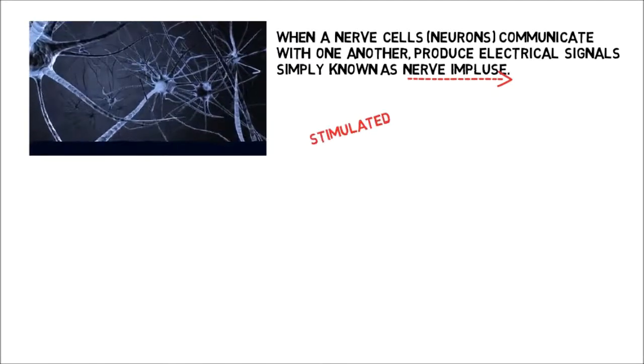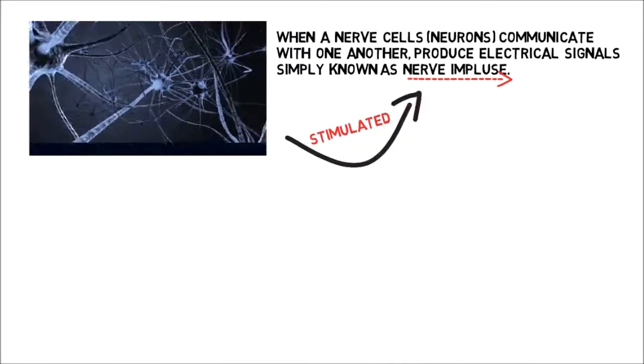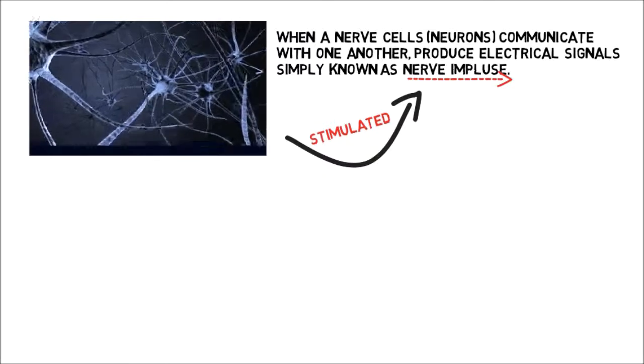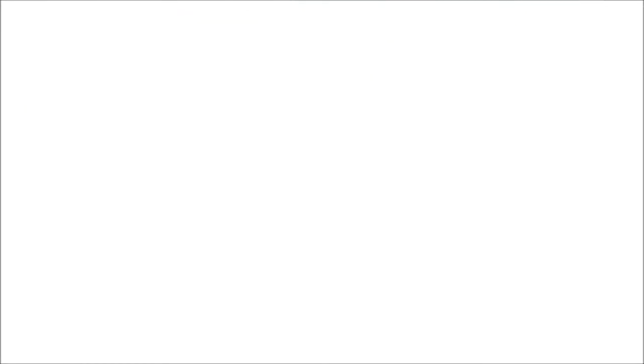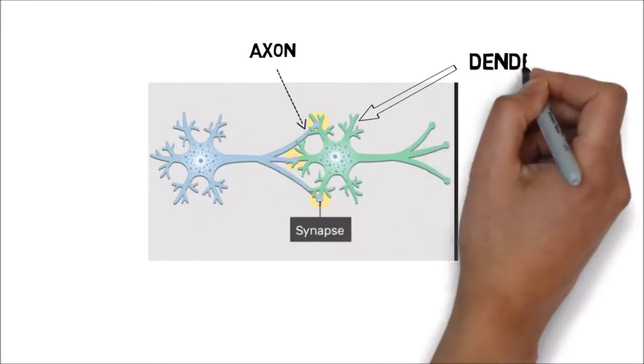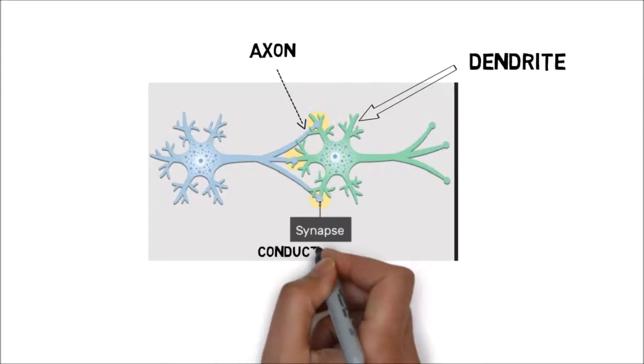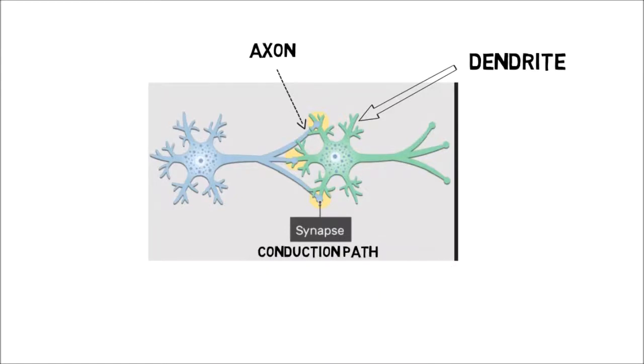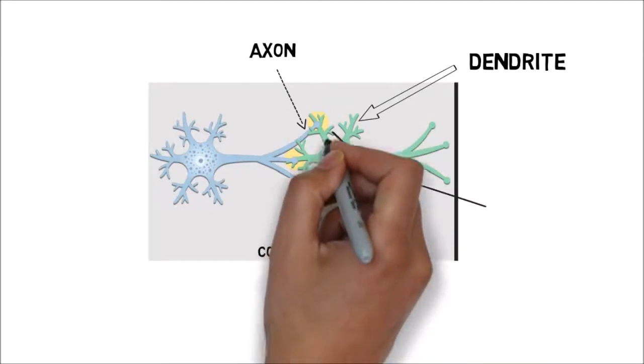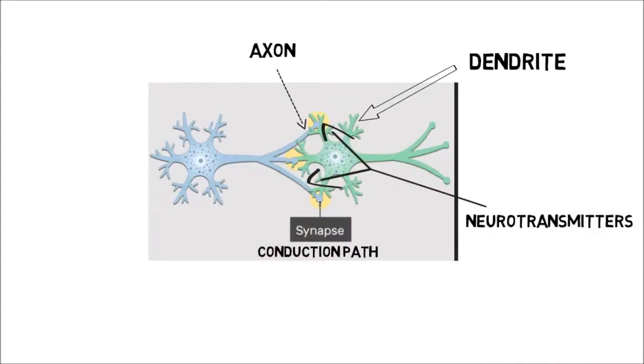What is a synapse? The place where the axon of one neuron meets the dendrite of another is called a synapse. The synapse is not a physical object like the neuron. It is the point of junction between the axon of one neuron and the dendrite of the next, or two neurons in the conduction path of a nerve impulse. When a nerve impulse reaches the end of an axon, the axon releases chemicals called neurotransmitters.